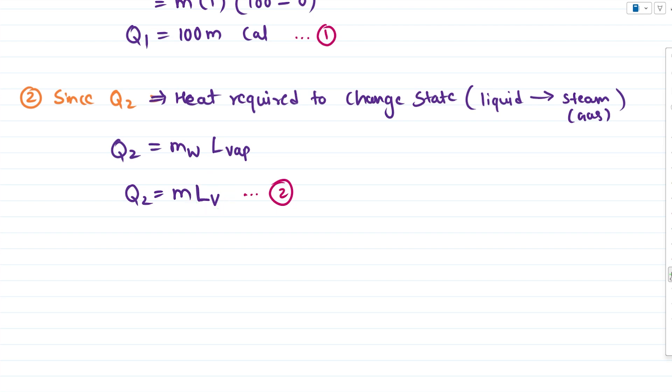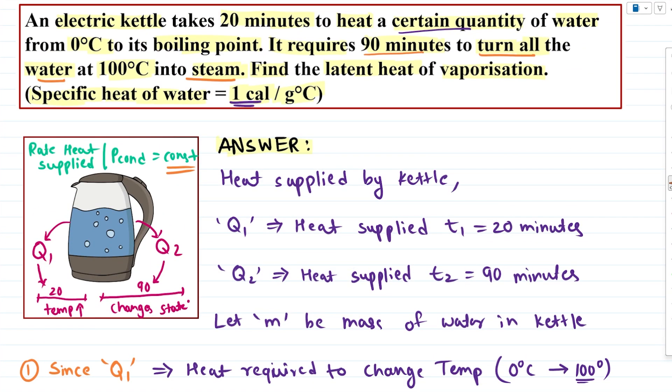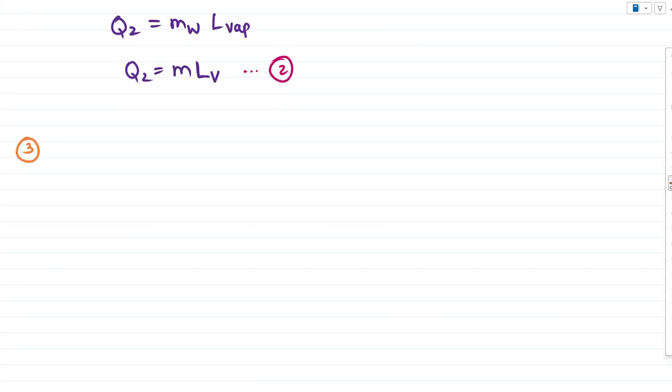Now we need to figure out one way where we can equate Q1 and Q2 and then we can cancel out some things and we get value of LV in terms of some numbers. We'll be using the condition that the rate at which this heat is supplied is always going to be constant.